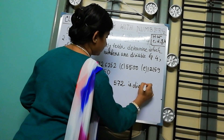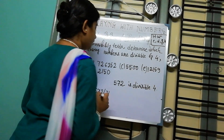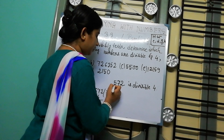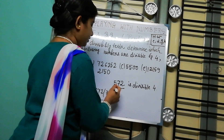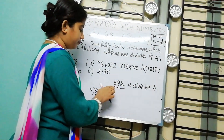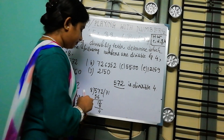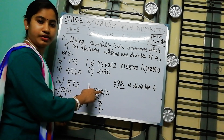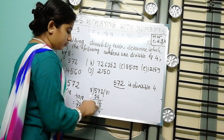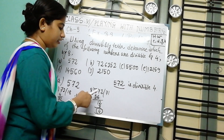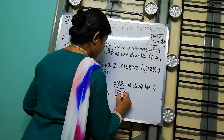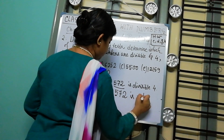Now it says whether this number is divisible by 8 or not. A number is divisible by 8 when its last 3 digits are divisible by 8. We divide 572 by 8 and get a remainder of 4. That means this number is not divisible by 8. So 572 is not divisible by 8.